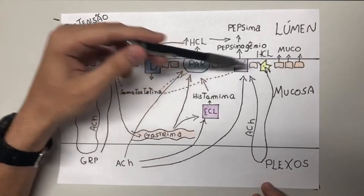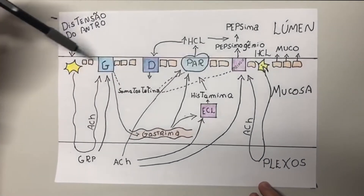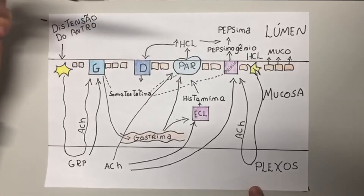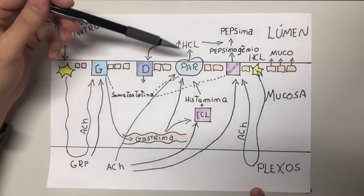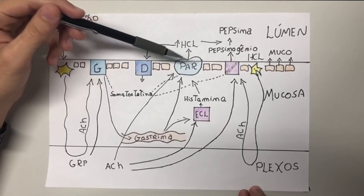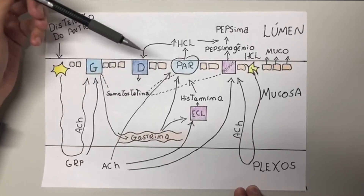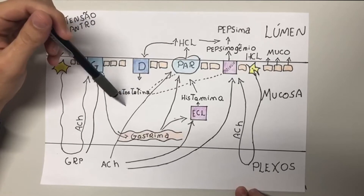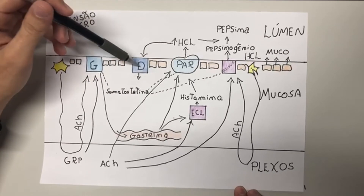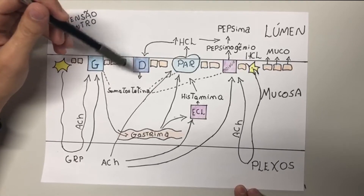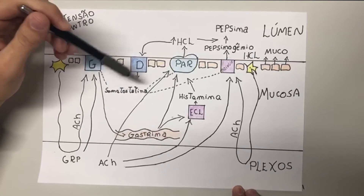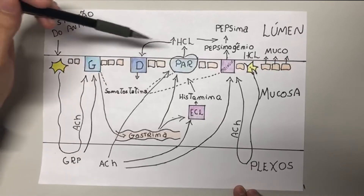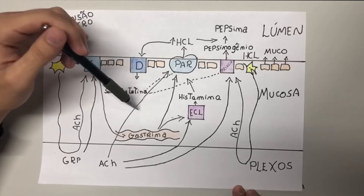As células mucosas são estimuladas pelo contato do alimento, irritação química e distensão do estômago. Elas produzem um muco espesso com bicarbonato, cuja função é proteger a mucosa da acidez do suco gástrico. Essa atividade também é estimulada pelo sistema nervoso autônomo parasimpático. Se houver excesso de ácido no estômago, a célula D detecta esse excesso e produz somatostatina, que inibe a ação das células G, parietais e principais, fazendo um processo de feedback negativo e diminuindo a secreção gástrica.